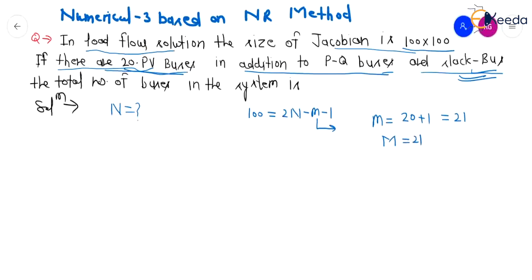So if you will put in this equation, 100 is equal to 2 into N minus M means 21 minus 1. So this will become 122 is equal to 2N. So N will be equal to 61. So 61 is the correct answer.